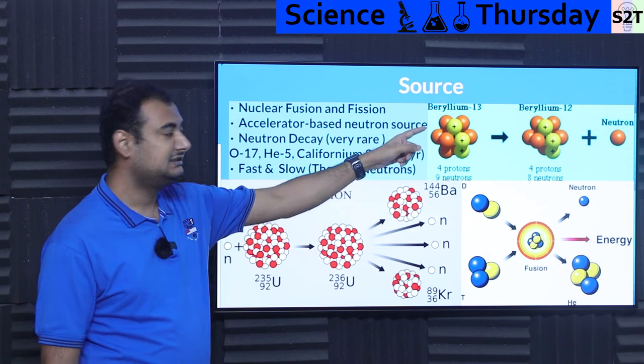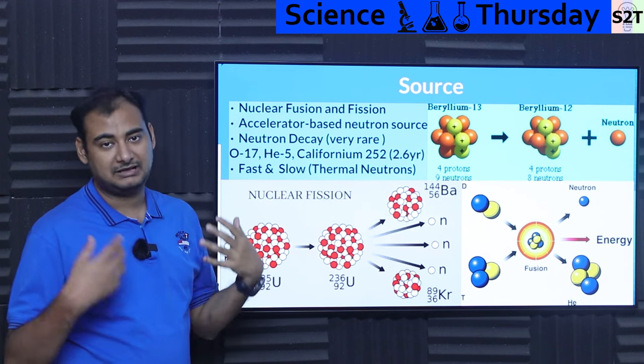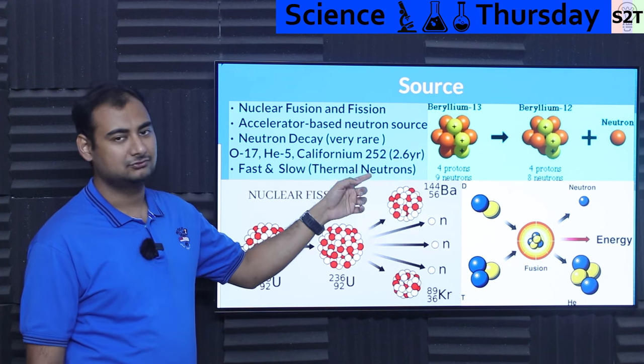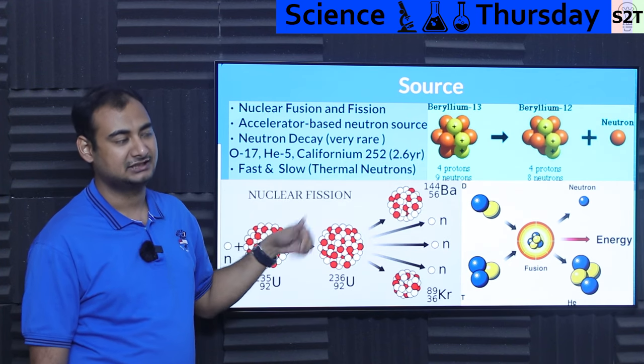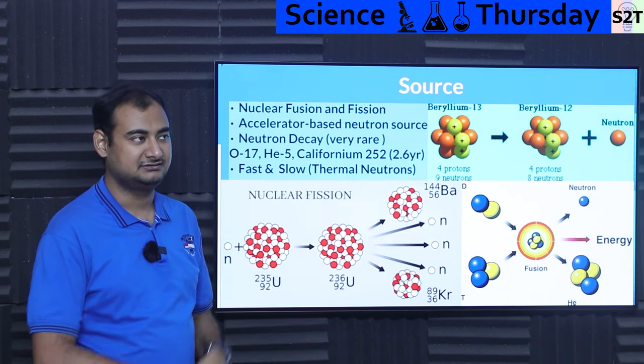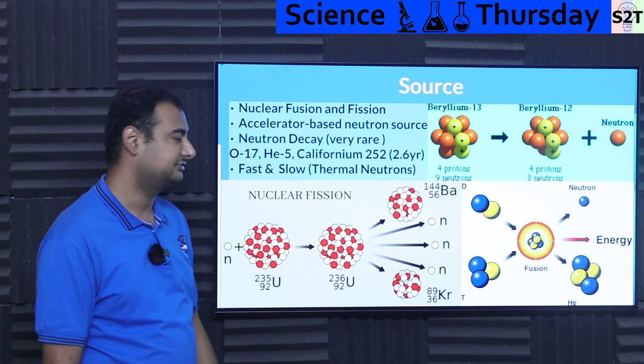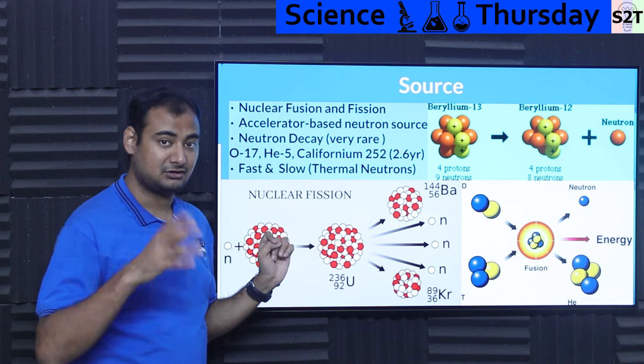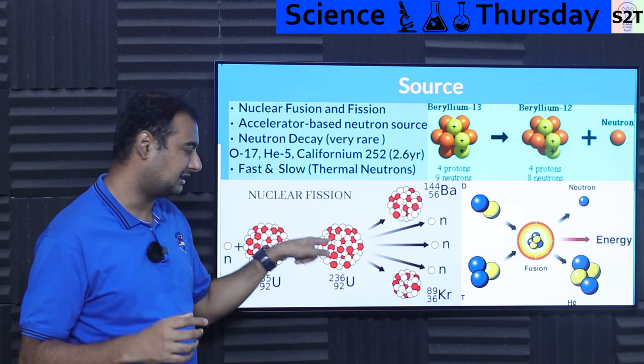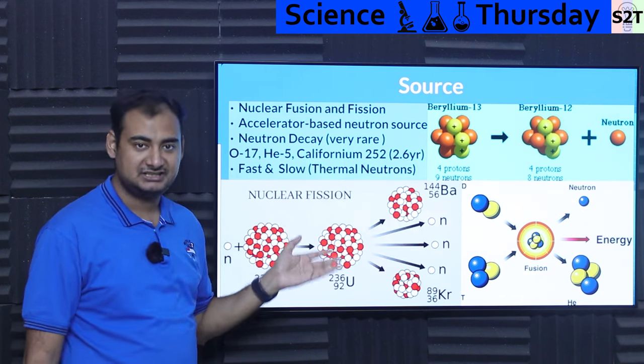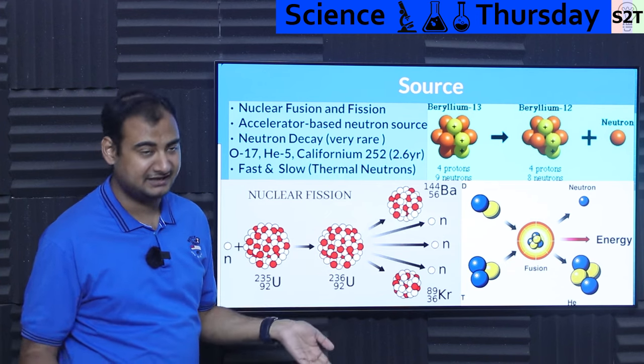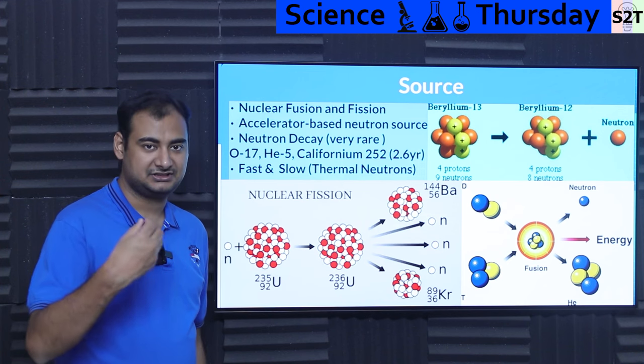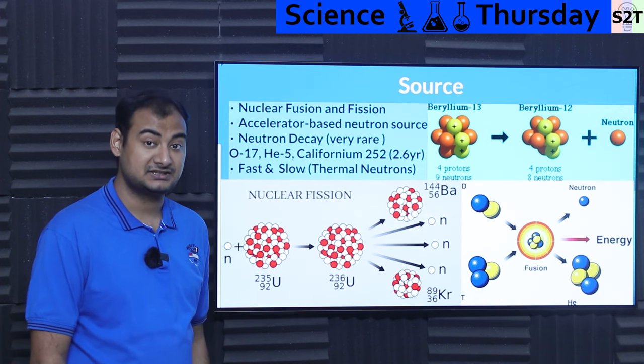For example oxygen 17 has that. Helium 5 has that. Beryllium 13 has that. Or the actual real life useful source is Californium 252. Now you are like wait a minute. Why the heck the name is California? Well it's manmade and they ran out of god names and all that stuff. So they just put a state name. And this puppy gives out neutron. Now be mindful neutron is a very integral part of a nucleus. So fundamentally it has a lifespan. Its half life is 2.6 years.